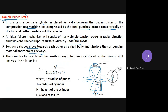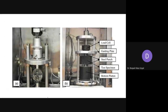The formula for calculating tensile strength in the double punch test is: ft = Q / (1.20 × v × h - a²), where a is the radius of the punch, d is the radius of the cylinder, h is the height of the cylinder, and Q is the load at failure. The test setup includes steel punches, a bottom plate, a load cell, and a guiding plate.